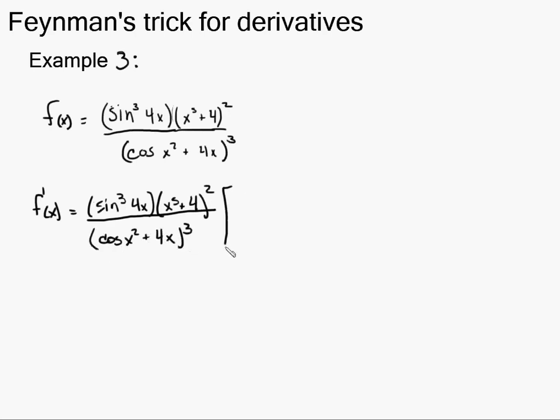Then I make a bracket and I go through term by term and do each one. So the first one, sine cubed, so the exponent is 3. On the bottom I put the thing, sine of 4x. And on the top I put the derivative, so 4 cosine 4x.